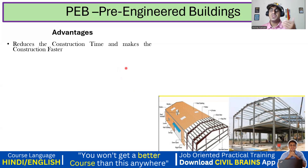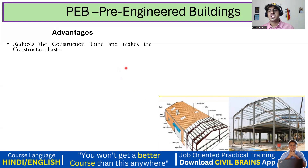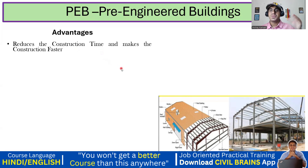Construction happens at a faster rate. If you're going with concrete structures, you have to do a lot of curing. To put up a slab, first you do centering work, shuttering work, reinforcement work, then pour concrete and wait for curing. That's why concrete structures take a long time, whereas PEB structure construction is faster and requires less time compared to RCC structures.